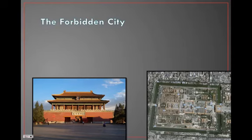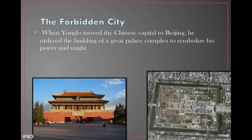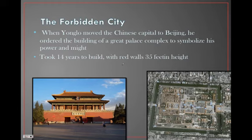Let's talk about Yong Lo's Forbidden City. It was again a way to show how powerful they were — 14 years to build, 35 feet in height.